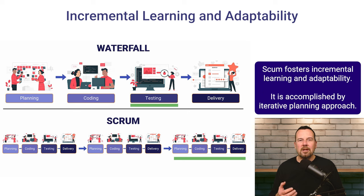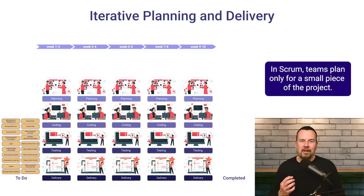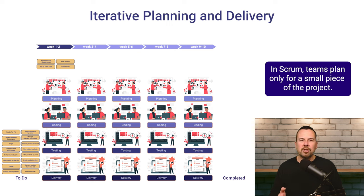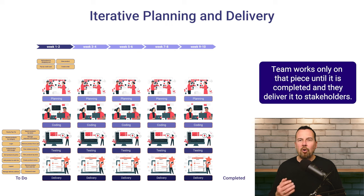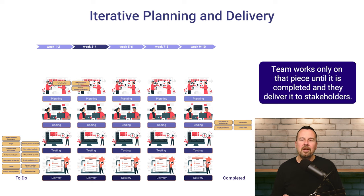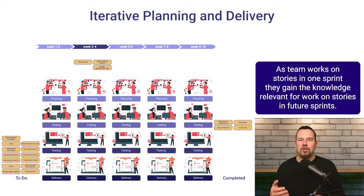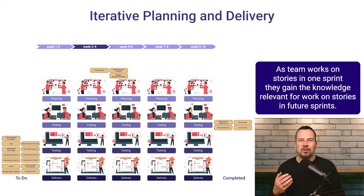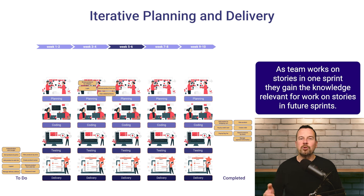That is accomplished by an iterative planning approach. In Scrum, teams plan only for a small piece of a project at a time. They work only on that piece, complete it in a couple of weeks, and deliver it to the stakeholders. As they work to resolve the complexities during the sprint, the team gains insights and knowledge that can be used to enhance their solutions and plans for future sprints.